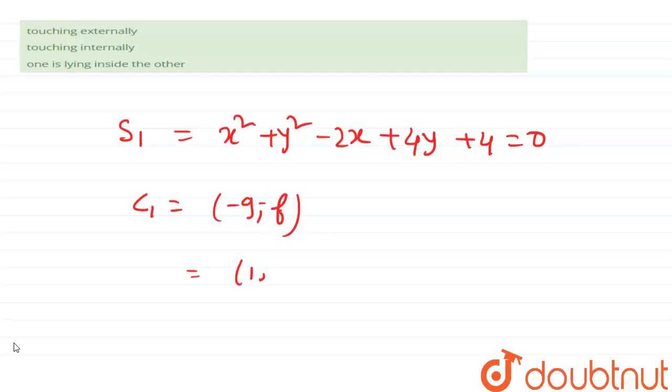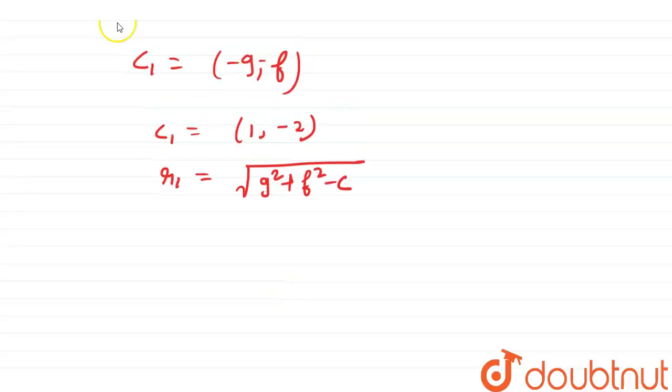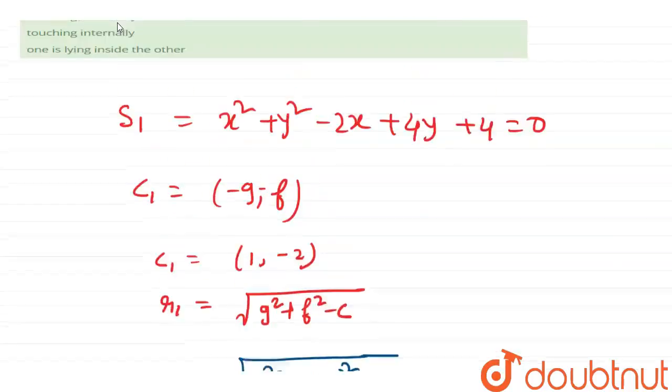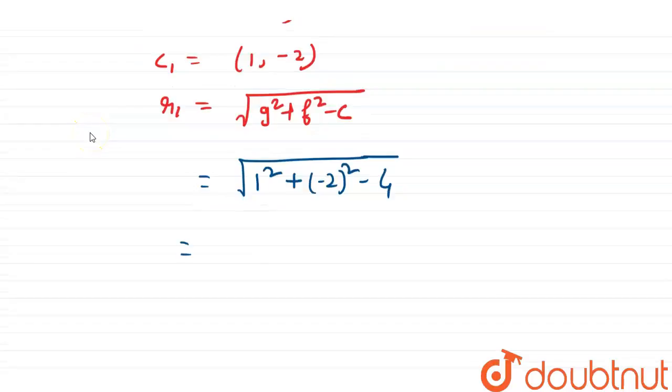Then radius r1 equals to root under g square plus f square minus c. Then g square is 1 whole square, f square is minus 2 whole square minus c. c means 4. Then 1 plus 4 minus 4. 4 cancels, so r1 equals to 1.